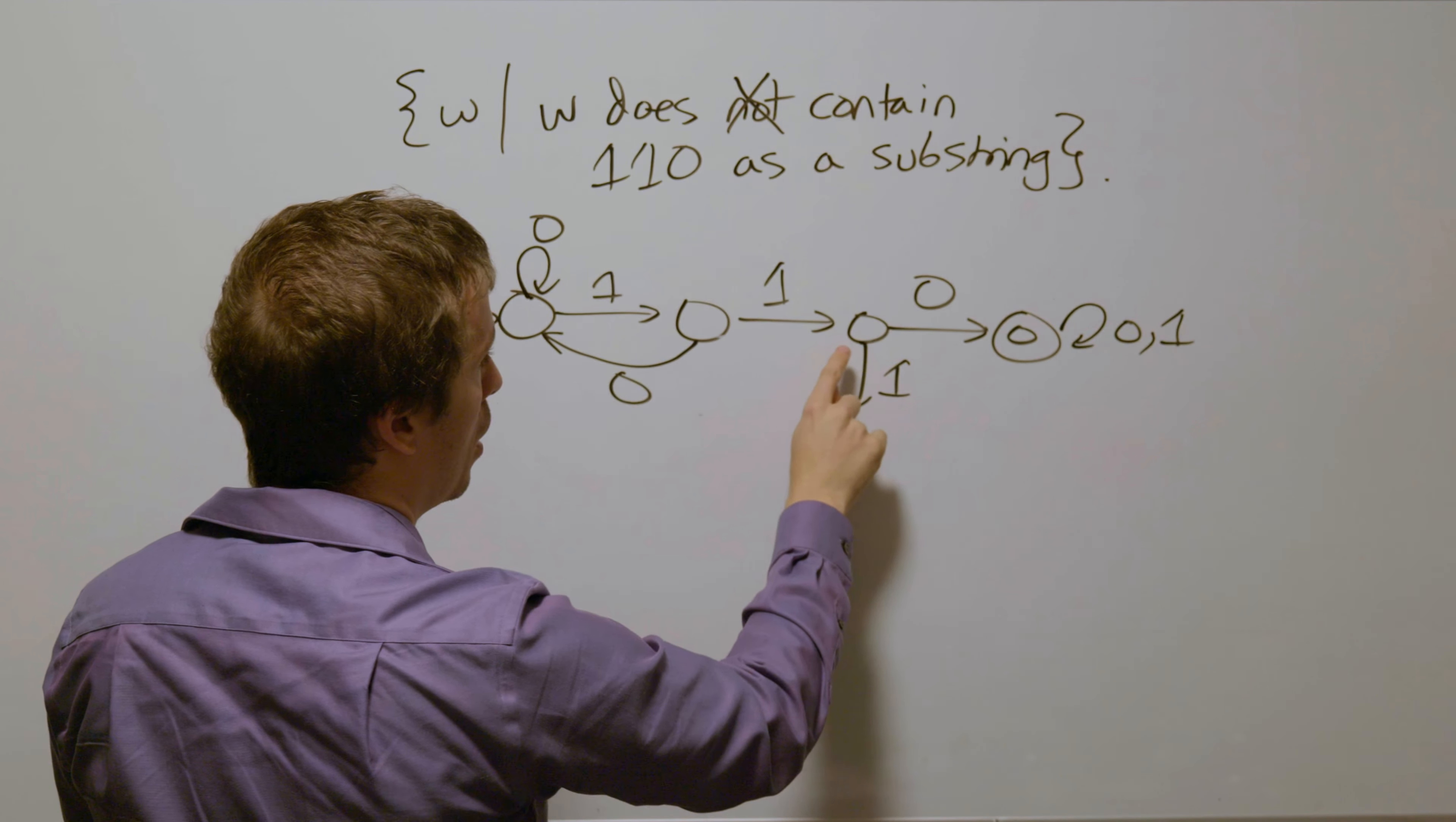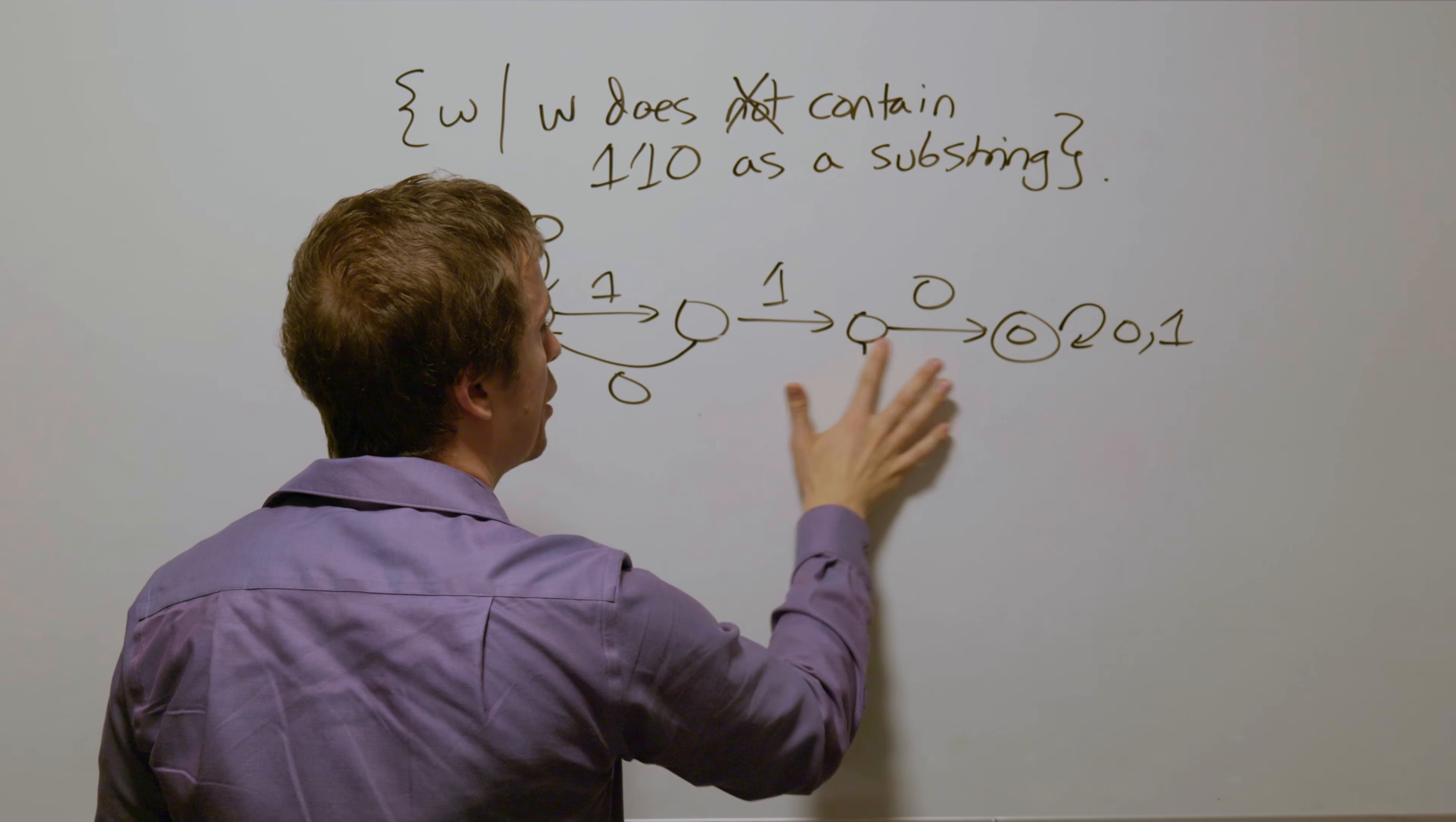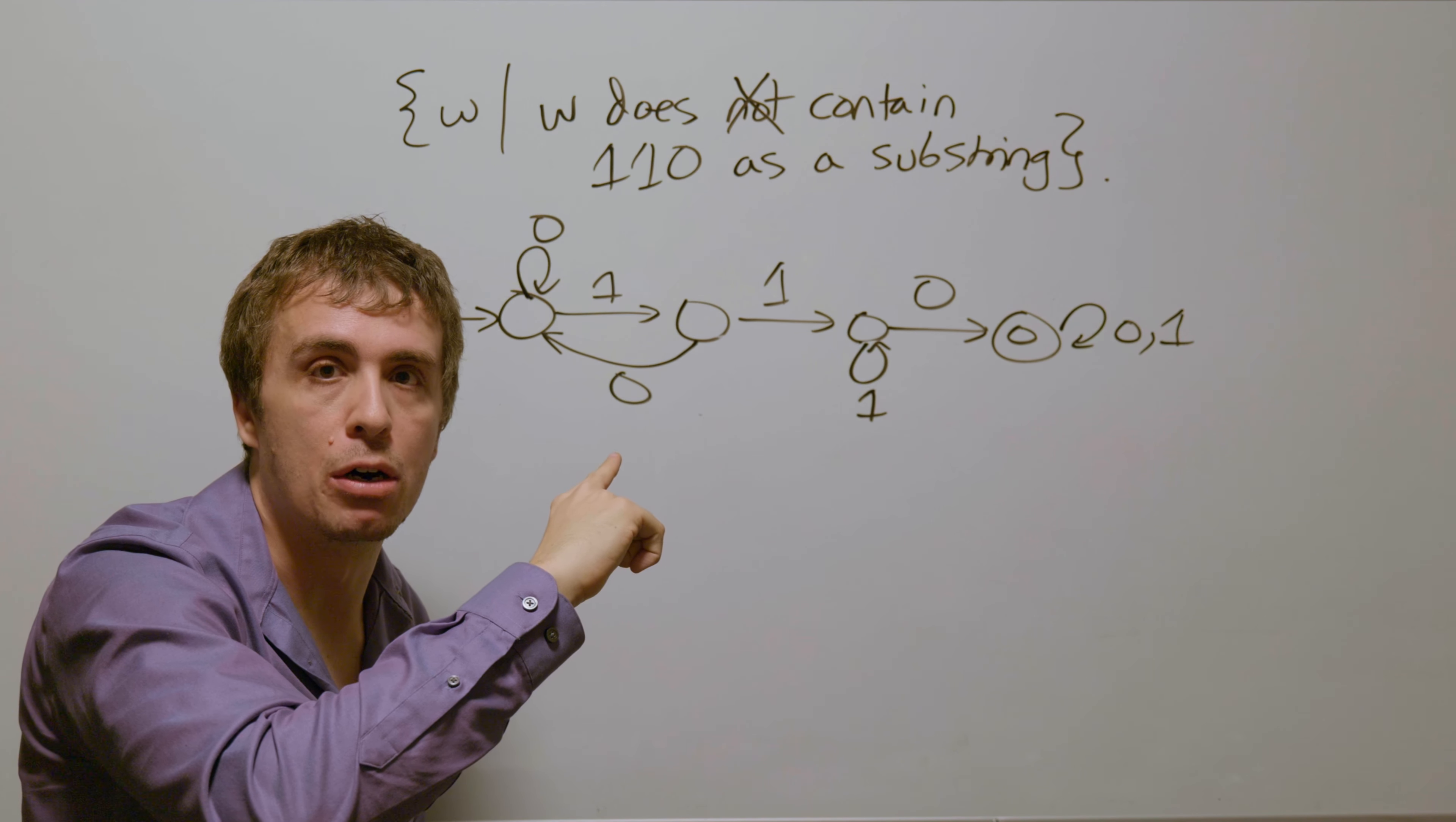And so therefore we should be right here because that corresponds to we've just read the 1,1 of the 110 substring. And so therefore this state needs to self-loop on 1. And so this is a DFA for all the strings that do contain 110 as a substring.